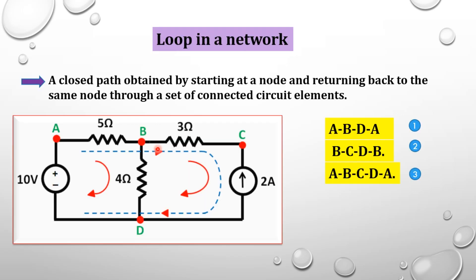Next, what is a loop? A loop is a closed path obtained by starting at a node and returning back to the same node through a set of connected circuit elements.